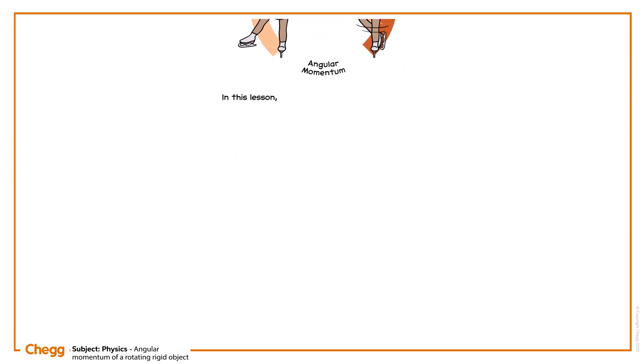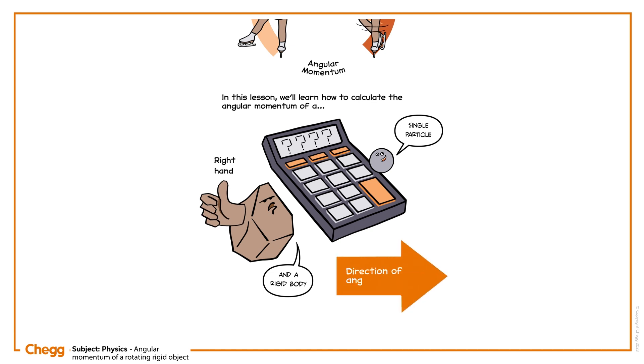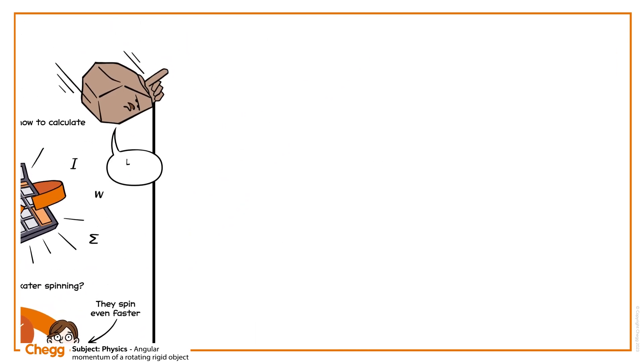In this lesson, we'll learn how to calculate the angular momentum of a single particle and a rigid body, and apply the right-hand rule to determine the direction of angular momentum. Let's dive in.